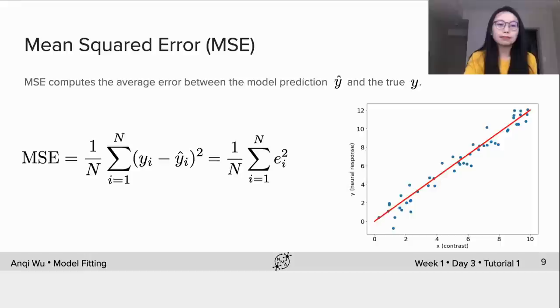A common method is to minimize the mean squared error. The mean squared error computes the average error between the model prediction ŷ and the true y. The mathematical definition is as follows: y is the true response, which is shown in the first term here,